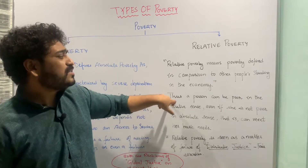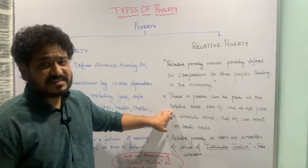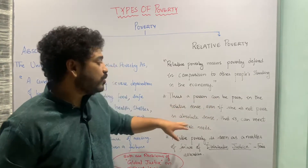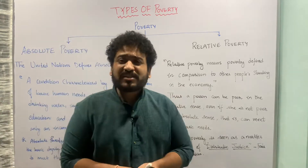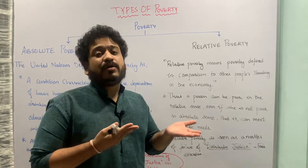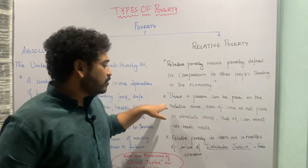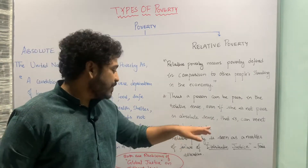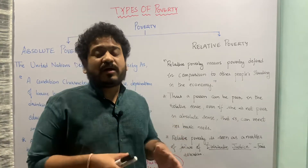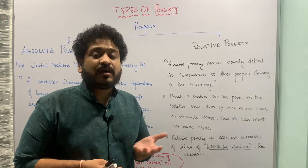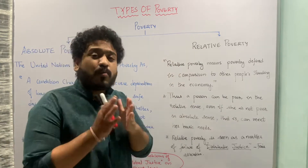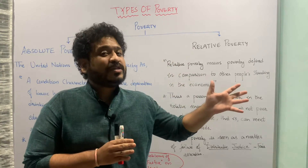A person can be poor in a relative sense even if he or she is not poor in an absolute sense. That means he or she is able to meet basic needs — food, shelter, clothing, and so on — but in a relative sense he or she is poor. This means that relative poverty is seen as a matter of failure of distributive justice: the resources in the economy are not distributed in a just or fair manner, and that is why one person is poor in relation to another individual.